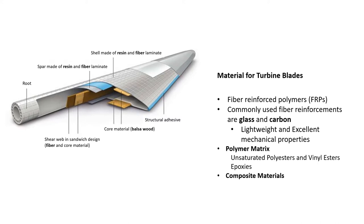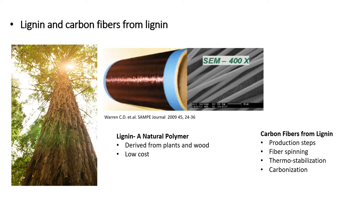Balsa wood or polymer foam are the core materials for both the shear web and shell of the blade. The shell itself is composed of resin fiber laminate, a balsa wood core and structural adhesive. Carbon fibers can be drawn from a much cheaper material called lignin, a natural polymer derived from plants and roots. Carbon fibers derived from lignin involve production steps: fiber spinning, thermostabilization and carbonization.